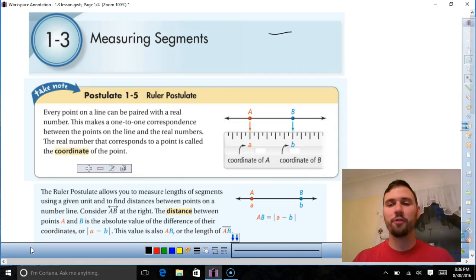First part of 1.3, the ruler postulate. All that says is every point in line can be paired with a real number and that makes a one-to-one correspondence. If you have a ruler, you can assign a number to each part of it, like a ruler does, and that's all it says.